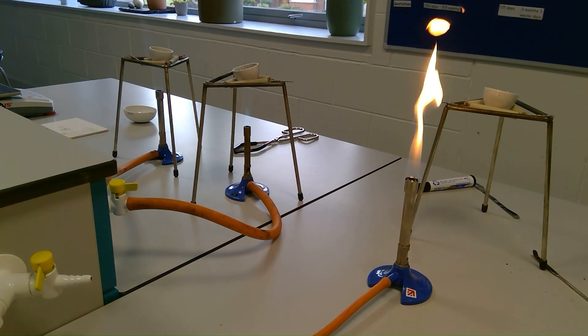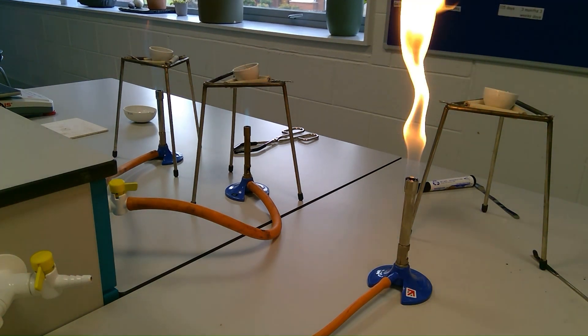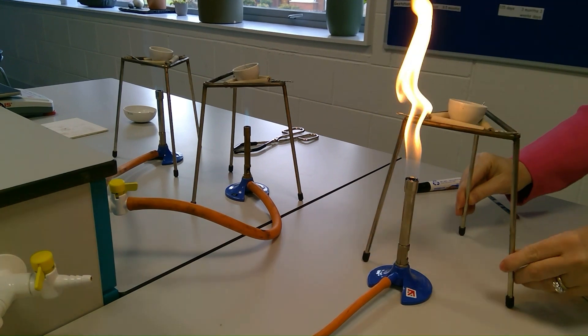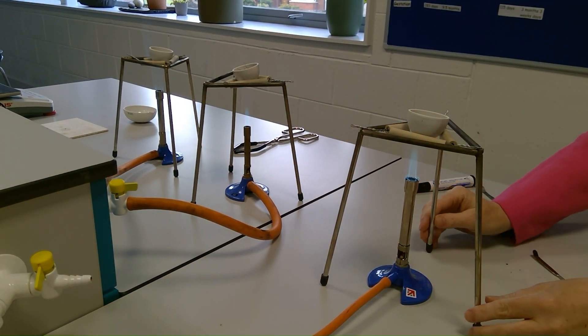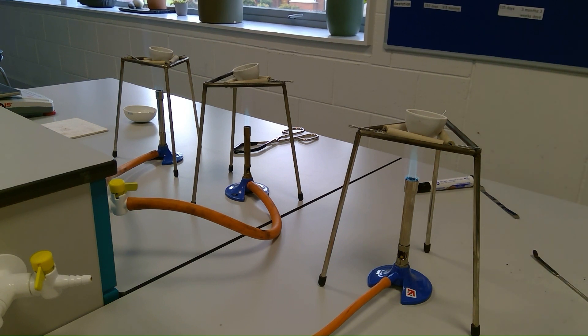And I'm going to move the tripod over the flame. I'm not going to touch the bunsen burner, and then I'm going to open it up so that the flame is directly below the crucible.